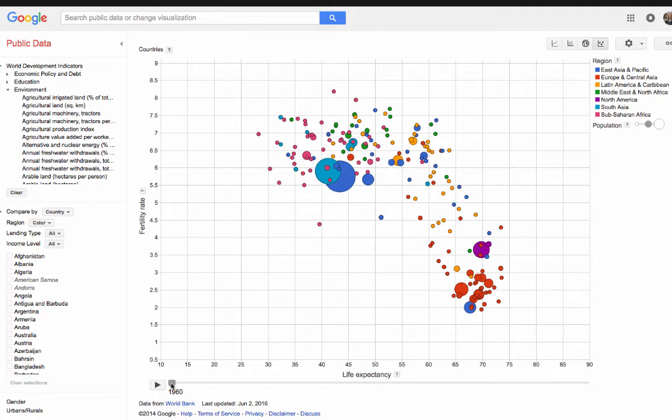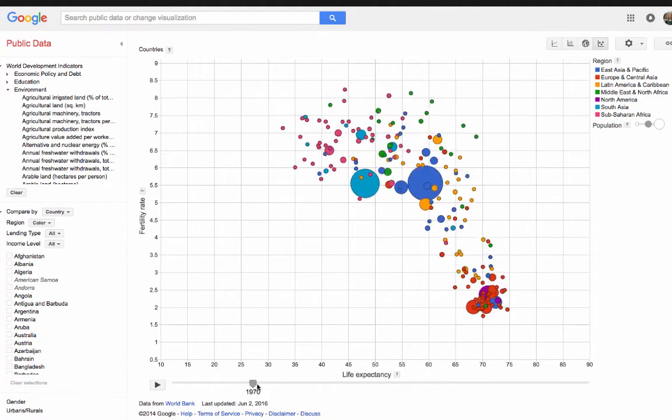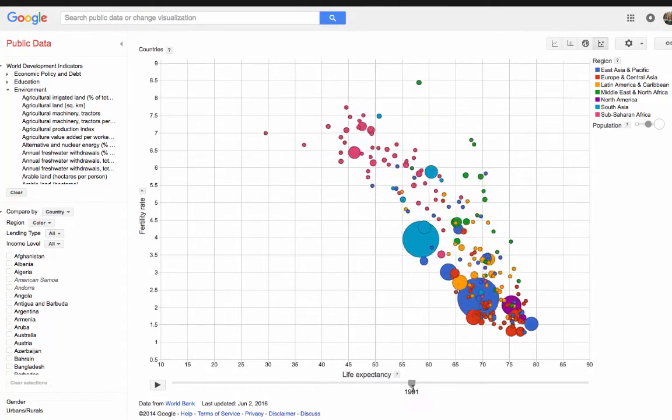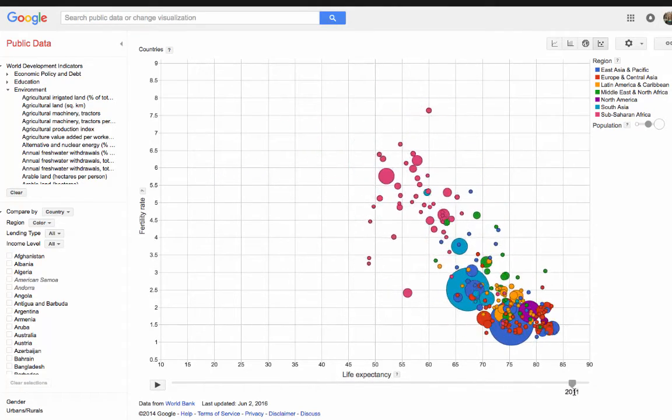This site draws on many open and available public data sources and has the data already represented as a graph with the ability to choose between different graph types.